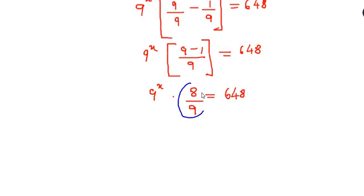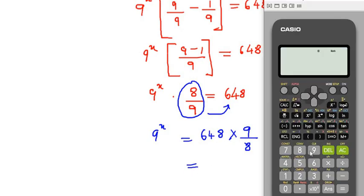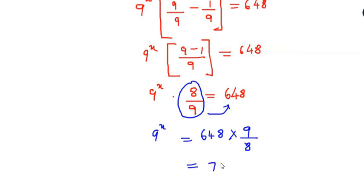Now we take 8 over 9 to the other side — it reciprocates and becomes 648 times 9 over 8. Solving: 648 times 9 divided by 8 gives us 729. So 9^x equals 729.